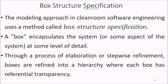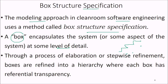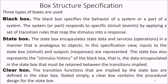The box structure specification is the modeling approach used in clean room software engineering. A box encapsulates the system, or some aspect of the system, at some level of detail. Through a process of elaboration or stepwise refinement, boxes are refined into a hierarchy where each box has a differential transparency. There are three types of boxes: black box, state box, and clear box.